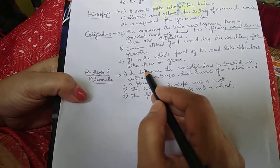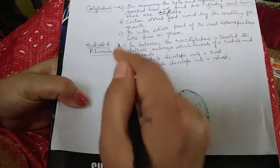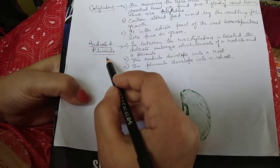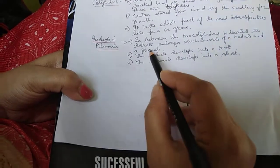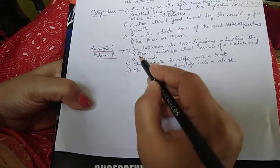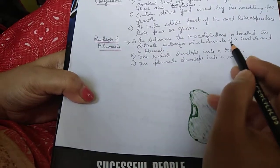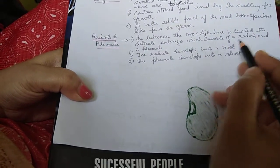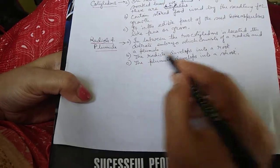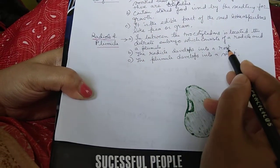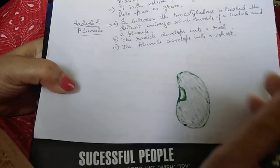In between the two cotyledons is located the delicate embryo, which consists of the radicle and the plumule. The radicle develops into the root and the plumule develops into the shoot.